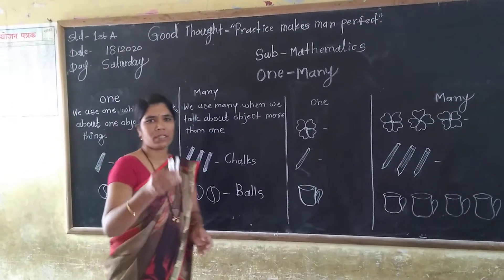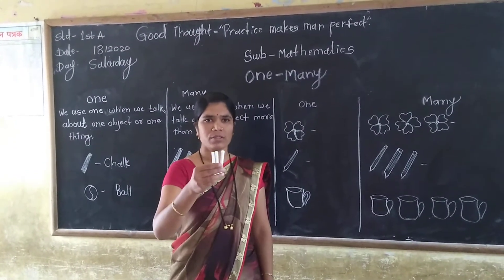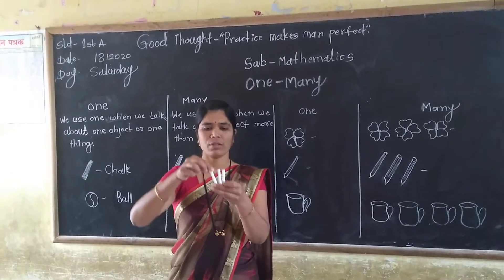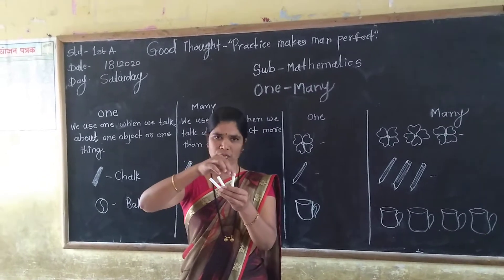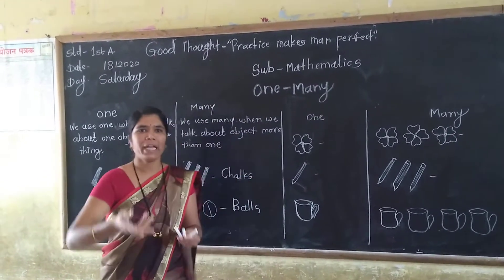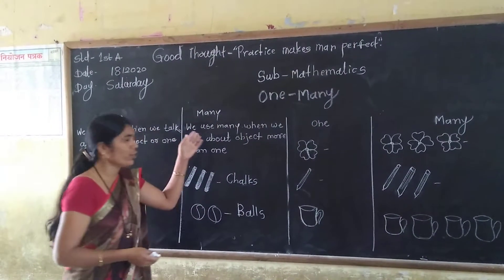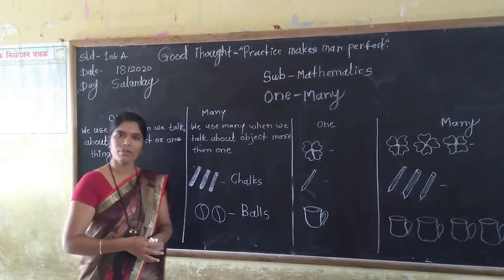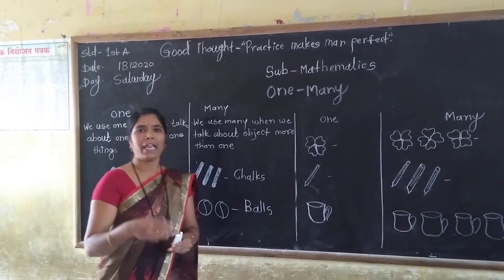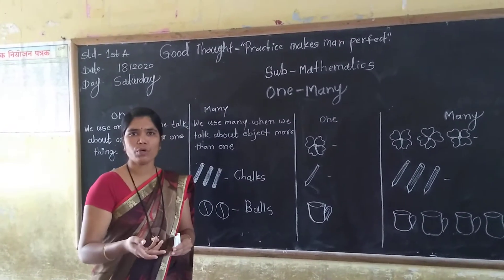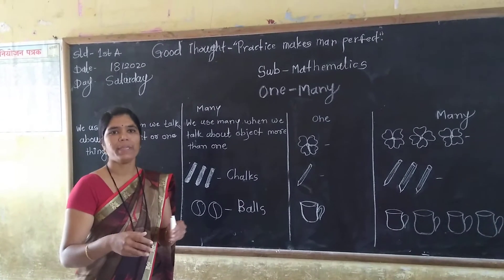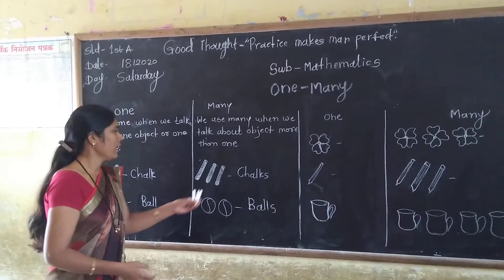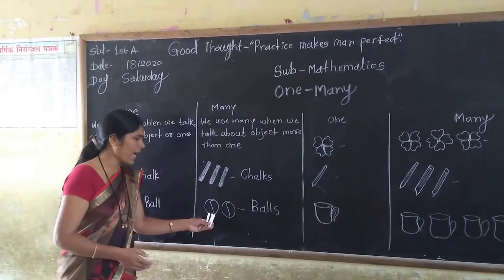Look at this. How many chops? There are 3 chops. We count it: 1, 2, 3. There are many chops. We use 'many' when we talk about more than one object.